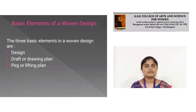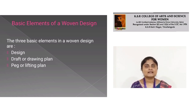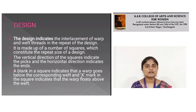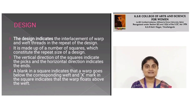Basic elements of woven design: There are three basic elements of woven design — design, draft or drawing plan, and peg plan. The design indicates the interlacement of warp and weft threads in the repeat of the design. It is made up of a number of squares which constitute the repeat size of a design. The vertical direction of the square indicates the weft and the horizontal direction indicates the warp. A blank square indicates the warp goes below the corresponding weft, and an X mark indicates the warp floats above the weft.